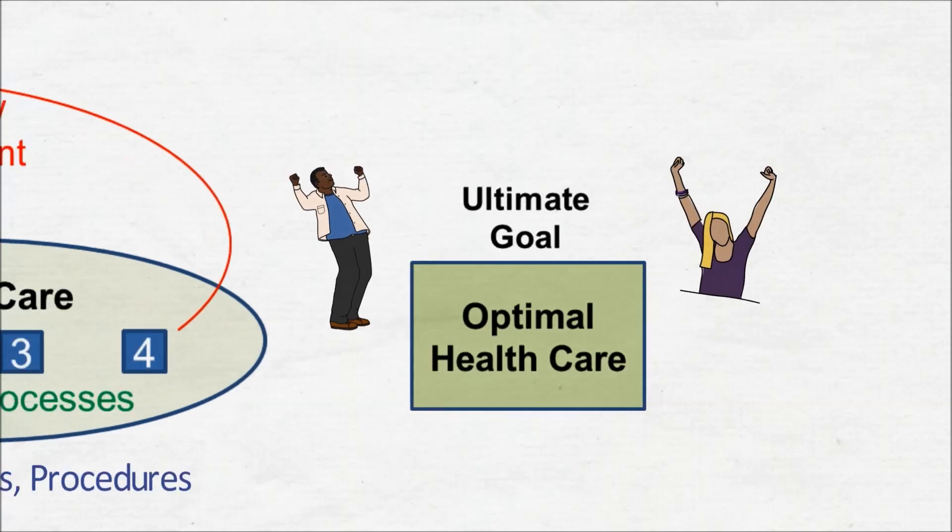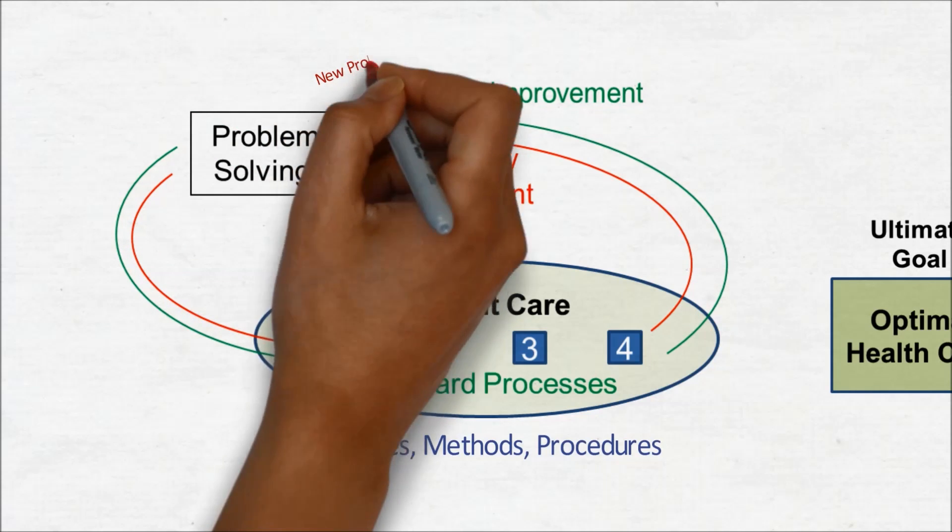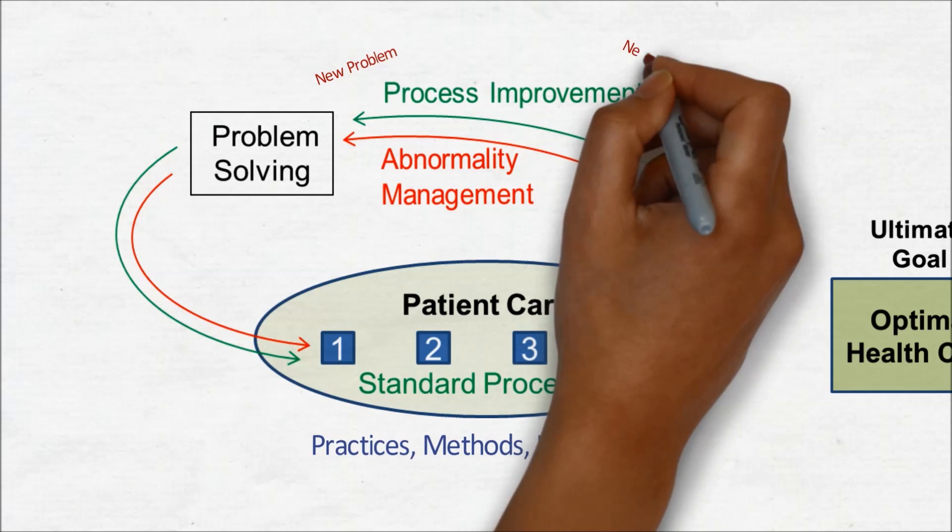So, when we see a problem, we'll address it with a standard problem solving method to ensure that it does not happen again. Once we stabilize our process, we can then think about how to improve them.